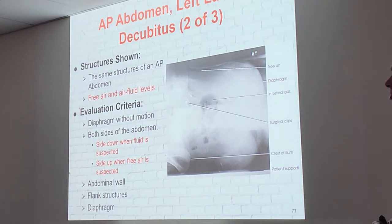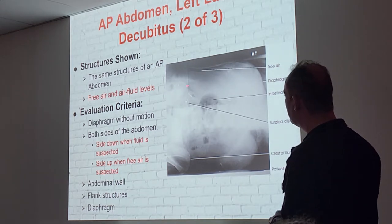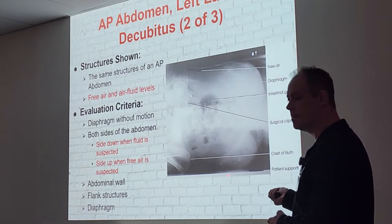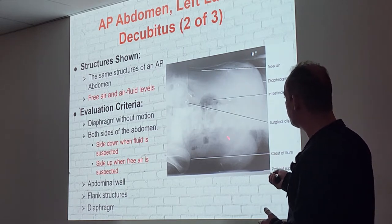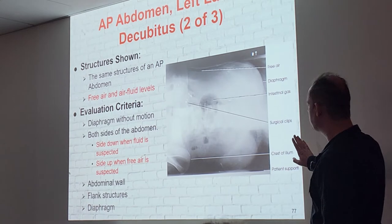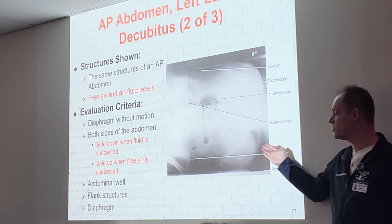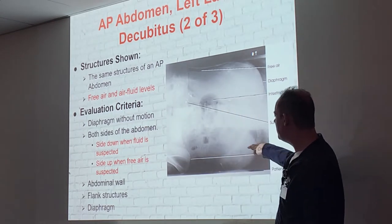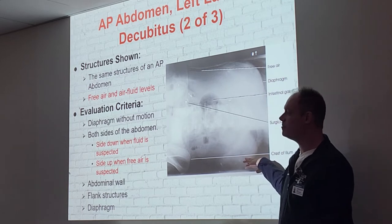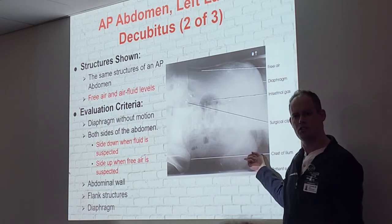If looking for both, put the side with fluid down — because air rises and fluid falls, you'll see both. Adjust the patient accordingly for what the radiologist wants to see. In the image, free air appears very dark. Fluid, if present, would fall toward the dependent area. We want to see the abdominal wall, flank stripes, and the diaphragm. Just like with the decubitus chest, build the patient up with pillows or a sponge so both sides of the abdomen are included — don't cut anything off or you risk missing pathology.